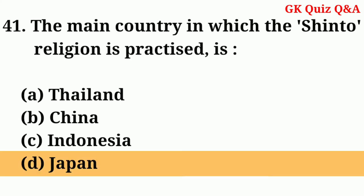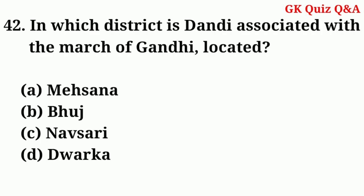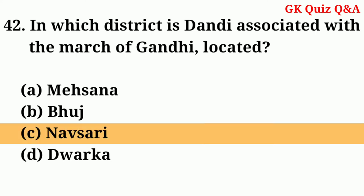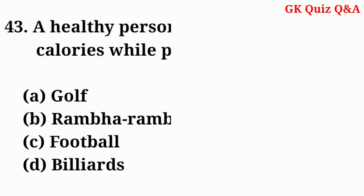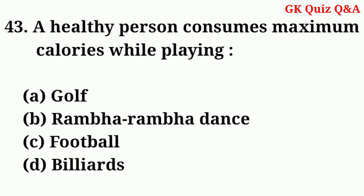The main country in which the Shinto religion is practiced is — Answer: D — Japan. In which district is Dandi, associated with the march of Gandhi, located? Answer: C — Navsari.